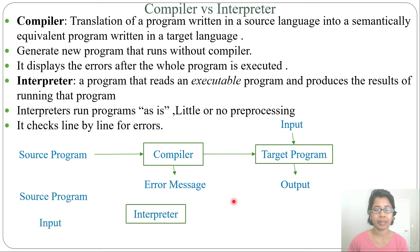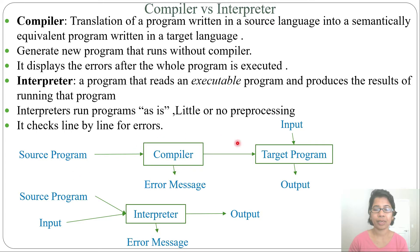An interpreter takes the source program and input together to produce output, and it can also give error messages. A compiler will take the source program and produce another target program that you can run again to get output. Both check for errors — the compiler checks the whole program at a time, while the interpreter checks line by line.